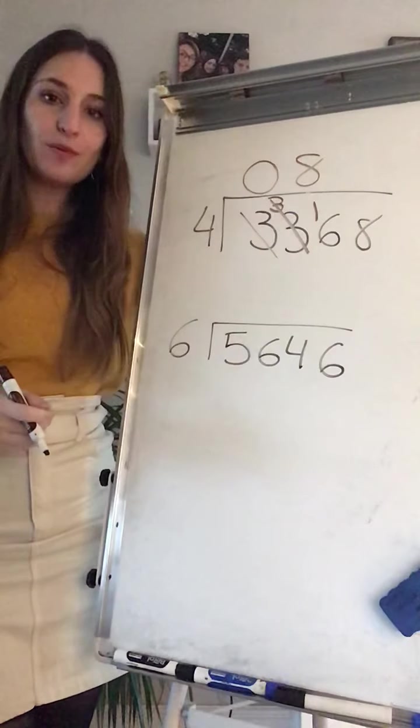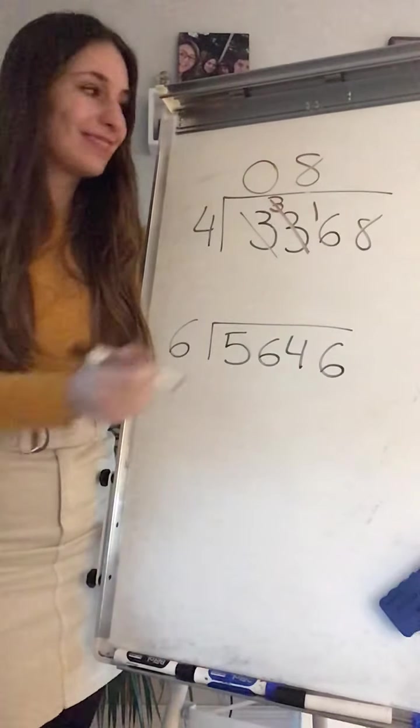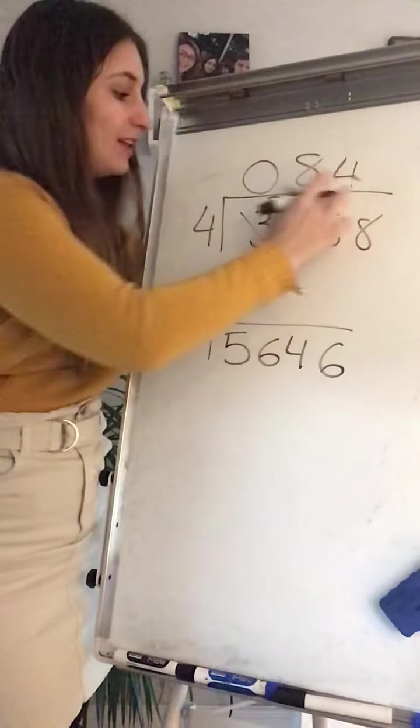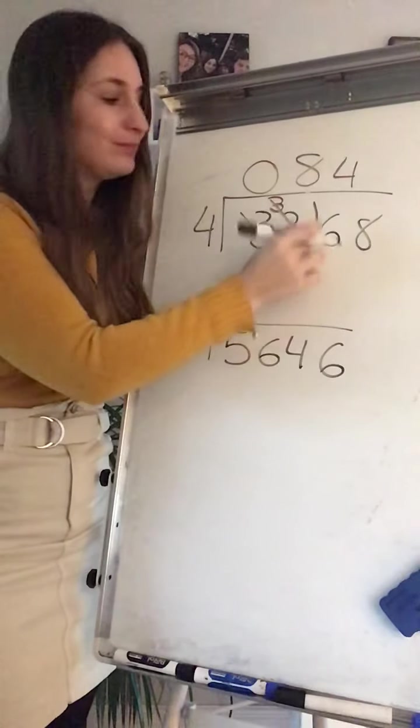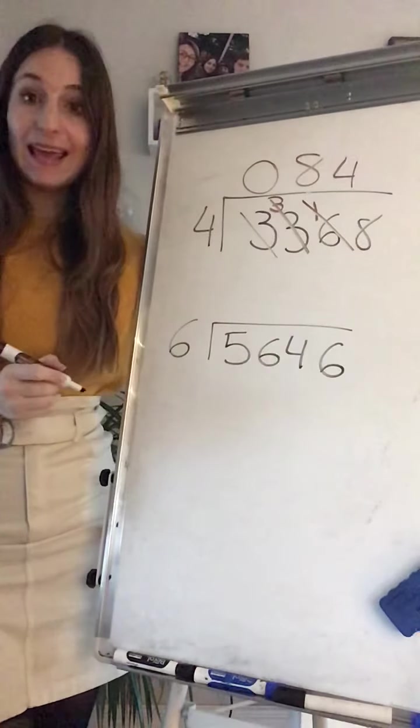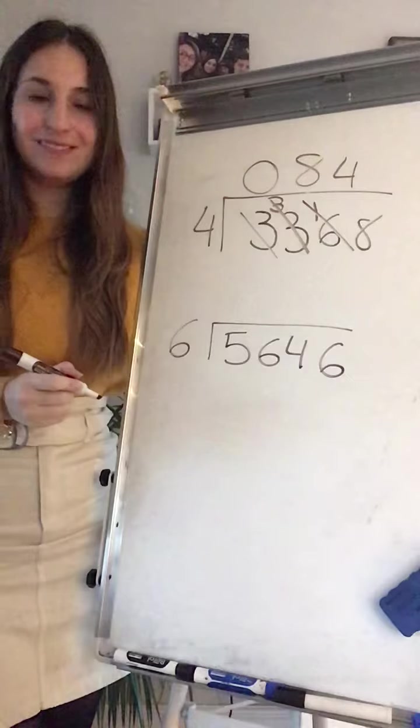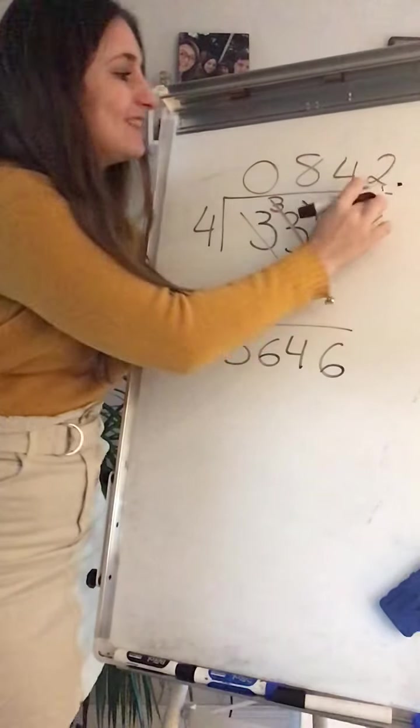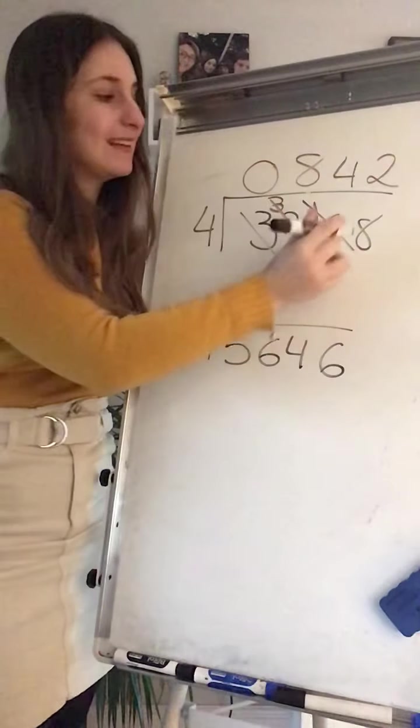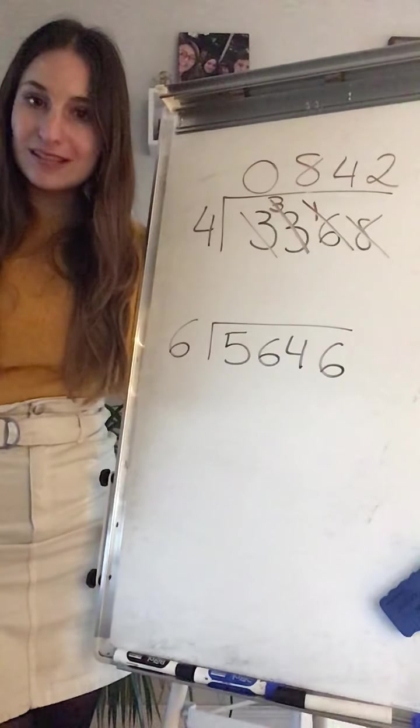16 on my 4 timetable. 4 times 4 is 16. 8 on my 4 timetable. 2 times 4 is 8. 842.